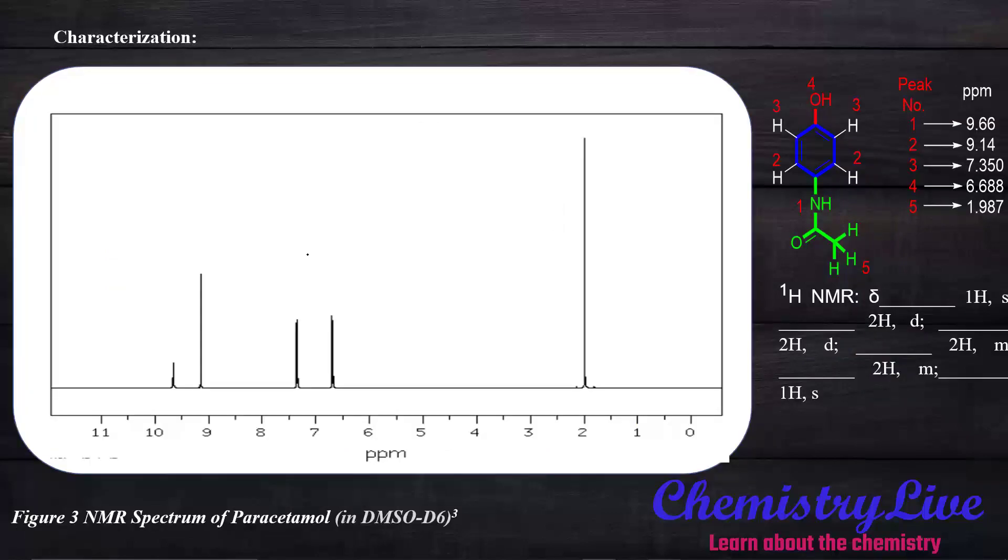For NMR characterization of paracetamol: the 1.97 ppm peak belongs to the CH3 group directly attached to CO. The 6.668 ppm peak belongs to the OH group. The 7.3 ppm peak belongs to 2 hydrogens of the aromatic ring. The 9.4 ppm peak belongs to 2 hydrogens of the aromatic ring. The highest at 9.66 ppm belongs to the NH directly attached to the benzene ring. This confirms our compound is prepared after NMR characterization.